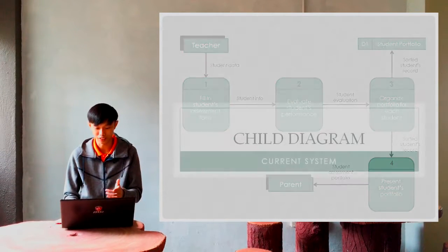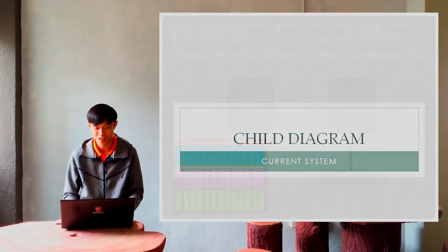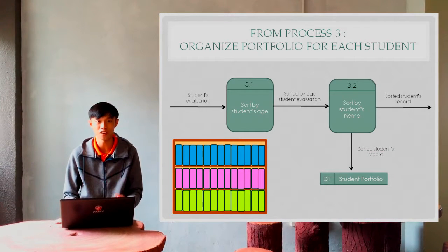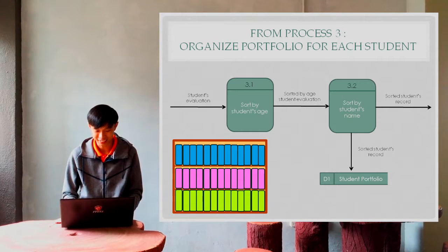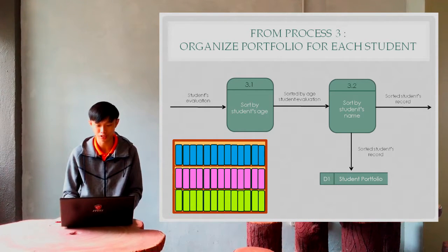For the child diagram, we have only one child diagram for one of the processes. This is from process three: organize portfolio for each student.